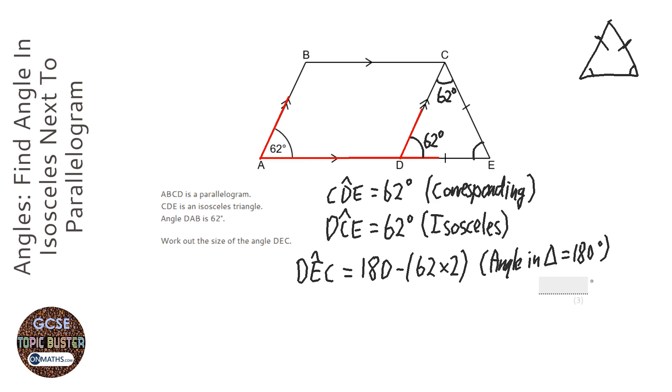So corresponding being one of them and isosceles being the other, and angles in triangle, don't draw a triangle, just write the word triangle. I'm trying to save time, although having discussed it, I've probably not saved much time.